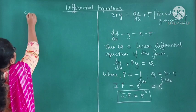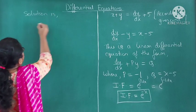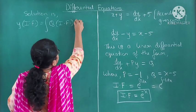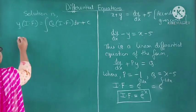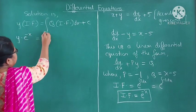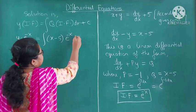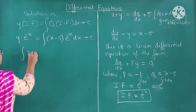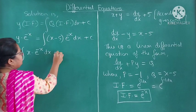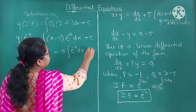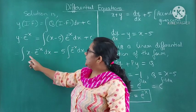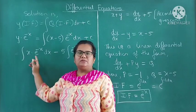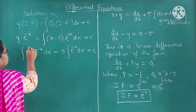We have found the integrating factor. The next step is to write the solution: y into integrating factor equals integration of Q into integrating factor dx plus C. Substituting: y into e raised to minus x equals integration of (x minus 5) into e raised to minus x dx plus C. Next we multiply the two brackets: integration of x into e raised to minus x dx minus 5 into integration of e raised to minus x dx.